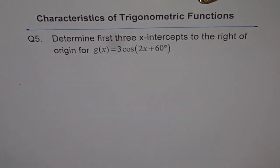Characteristics of trigonometric functions. Question 5: Determine the first 3 x-intercepts to the right of the origin for g(x) = 3 cos(2x + 60°).